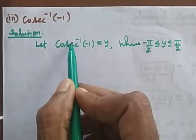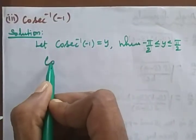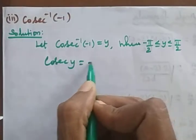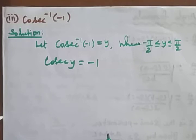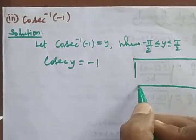So cosecant y = −1. Since cosecant is the reciprocal of sine, we have 1/sin y = −1.